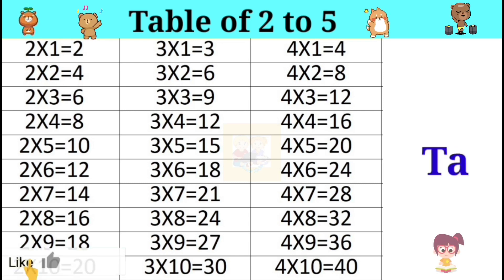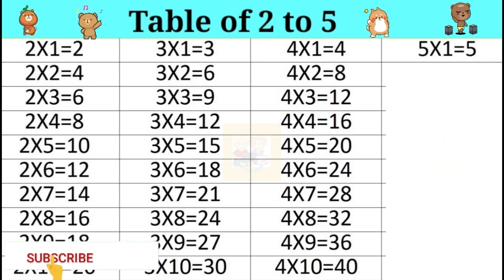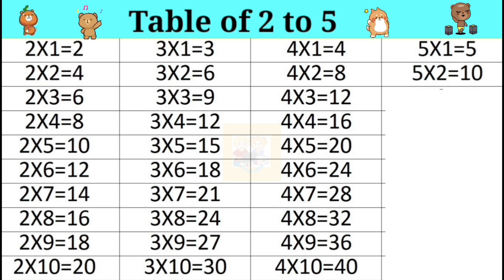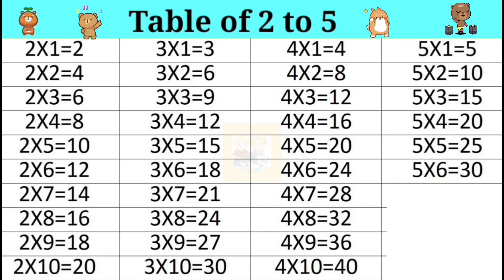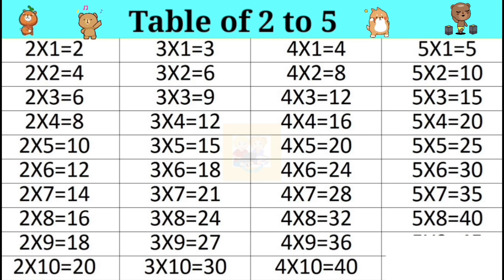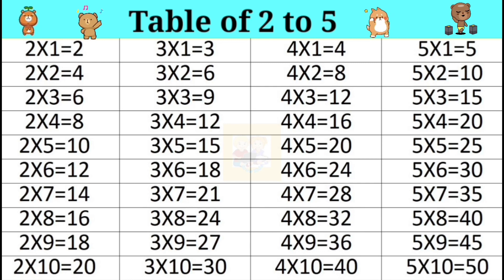Table of 5. 5 ones are 5. 5 twos are 10. 5 threes are 15. 5 fours are 20. 5 fives are 25. 5 sixes are 30. 5 sevens are 35. 5 eights are 40. 5 nines are 45. 5 tens are 50.